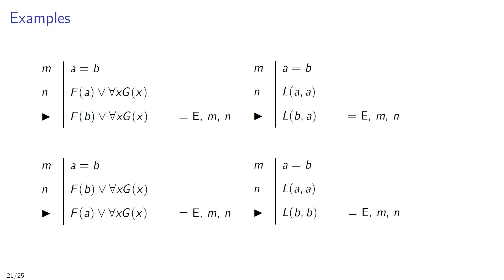To give a third example, let's look at the top right corner. Suppose in line M we have the sentence A equals B and in line N we have the sentence LAA. You can then infer LBA and justify this inference by identity elimination applied to lines M and N. And for a final example, suppose that in line M we have A equals B and in line N we have the sentence LAA — you can then infer LBB, justified by identity elimination applied to lines M and N.